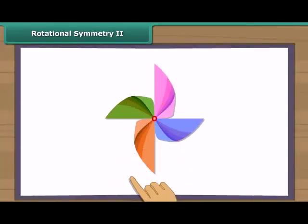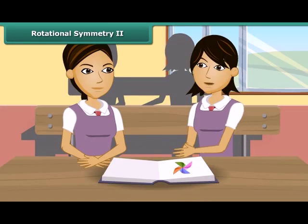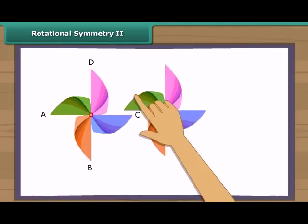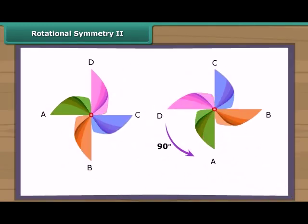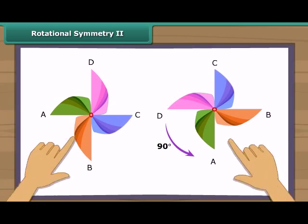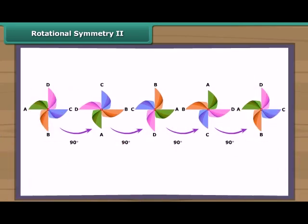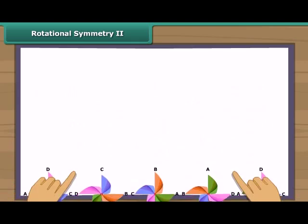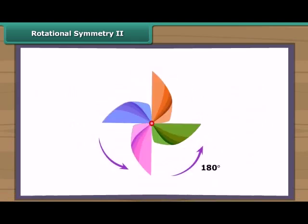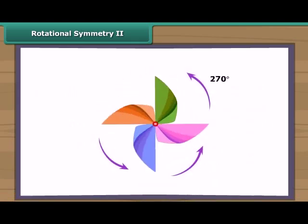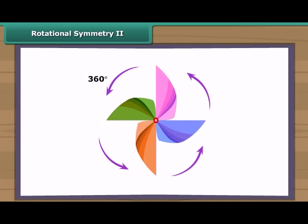This is a paper windmill — it has rotational symmetry. If you rotate it by 90 degrees about the fixed point, the windmill will look exactly the same. In a full turn, there are four positions: on rotation through 90 degrees, 180 degrees, 270 degrees, and 360 degrees, the windmill looks exactly the same. Therefore, we can say that it has a rotational symmetry of order 4.